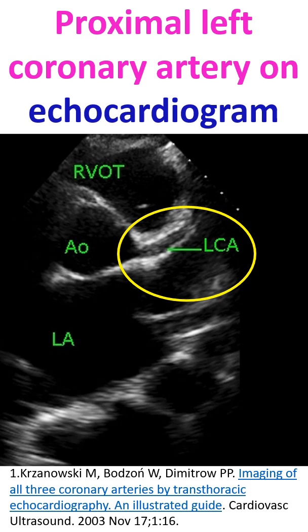Proximal portions of major coronary arteries can often be seen on echocardiography, while distal regions can seldom be imaged. Coronary arteries are better seen if they are dilated, especially in those with aneurysms in Kawasaki disease. In this case, the proximal left coronary artery is mildly dilated, possibly because of underlying valvular lesions with left ventricular dilatation and hypertrophy.